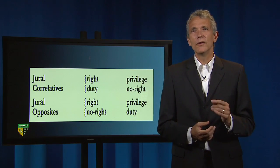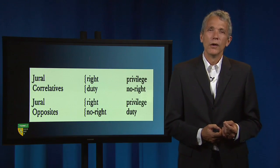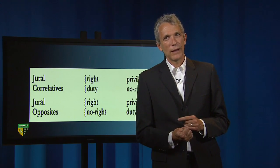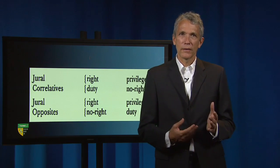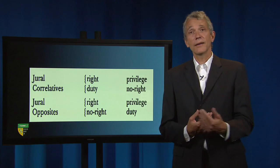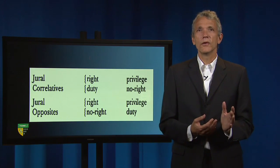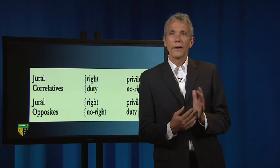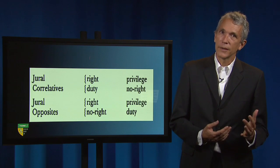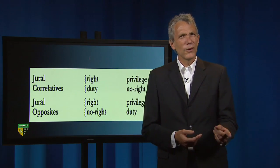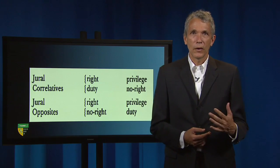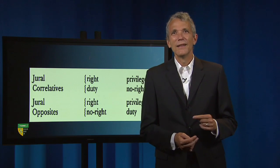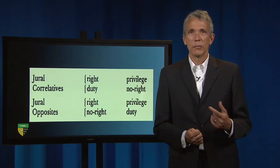Hohfeld notes that a duty is the opposite of a privilege. Your duty not to park in space X is the opposite of a privilege to park in the space. Hence, the absence of a privilege to park there constitutes the presence of a duty not to park there. And conversely, the absence of a duty not to park there constitutes the presence of a privilege to park there. Therefore, my having a Hohfeldian right to park in my reserved space X means that you have no corresponding privilege to park in that space, while my having a Hohfeldian privilege to park in that space would mean that you do have a corresponding privilege to park there.